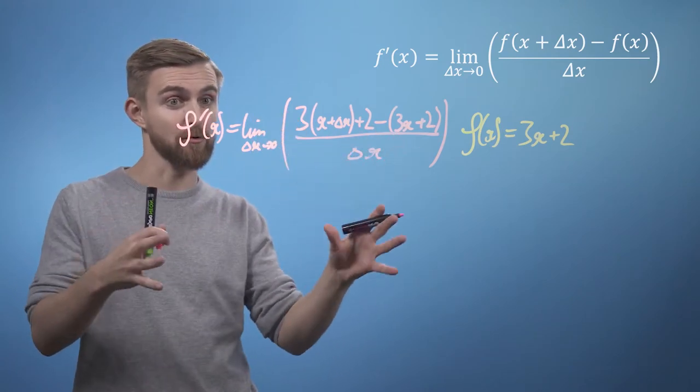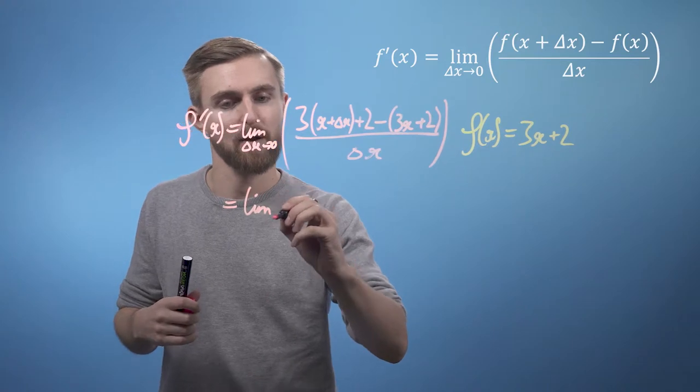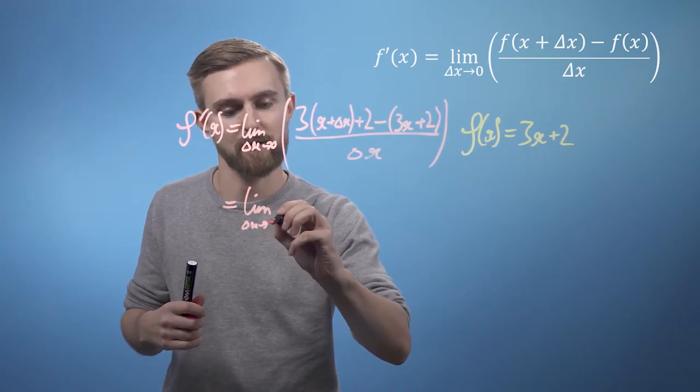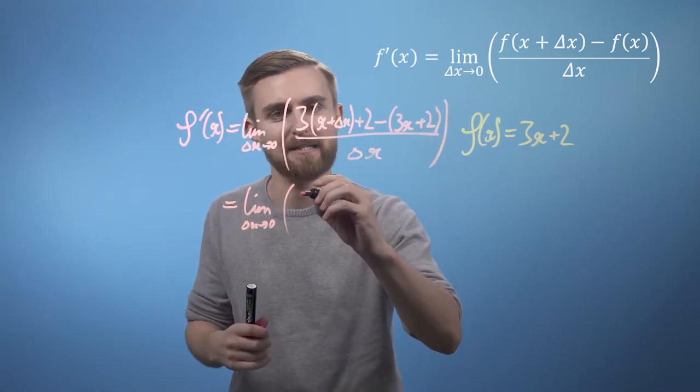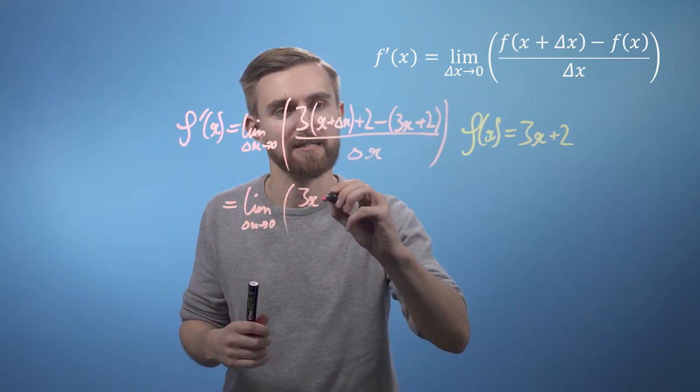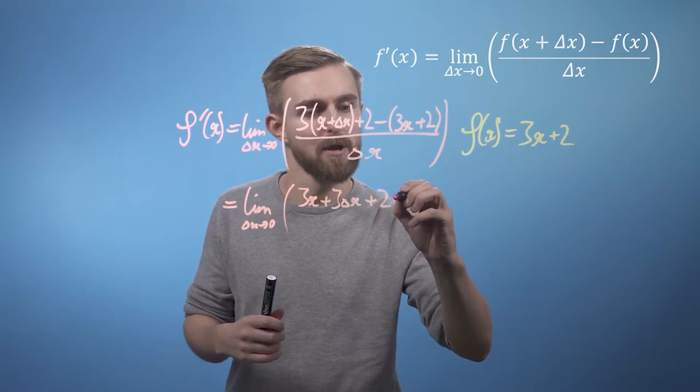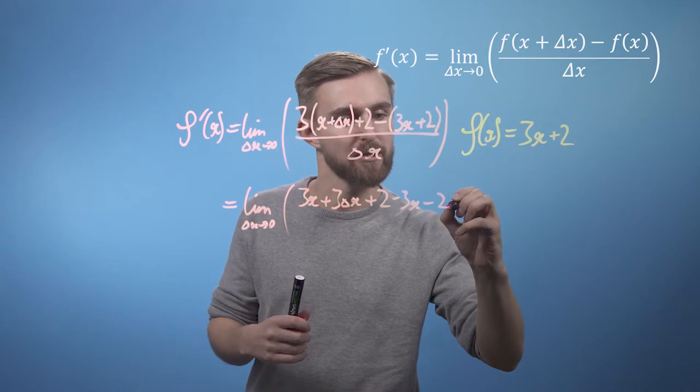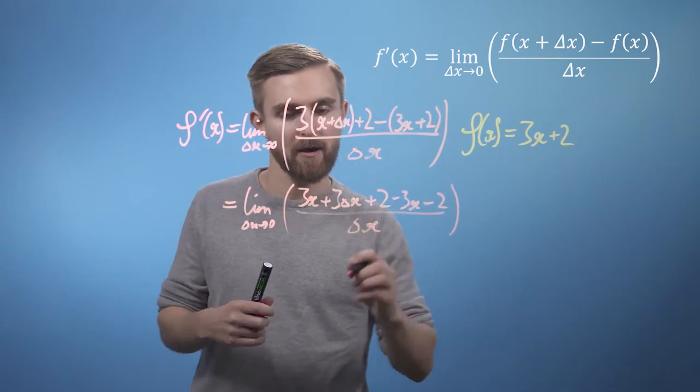And now we just work through the algebra. So we can say the limit as delta x goes to zero of, and so we can expand these brackets out, so we're going to get 3x plus 3 delta x plus 2 minus 3x minus 2, all divided by delta x, okay?